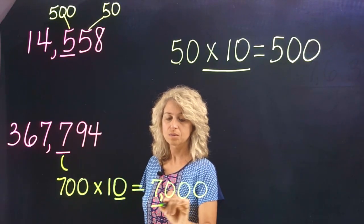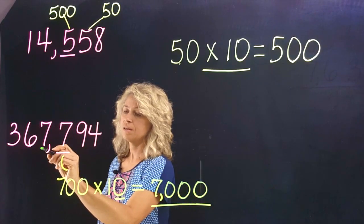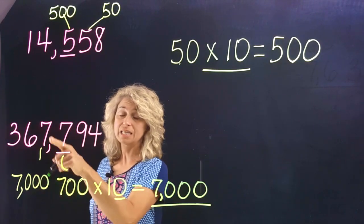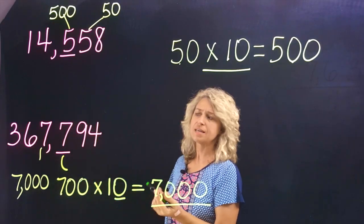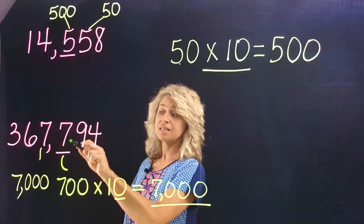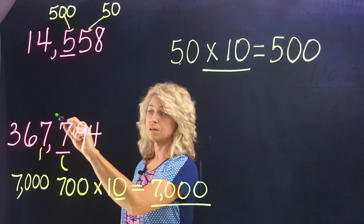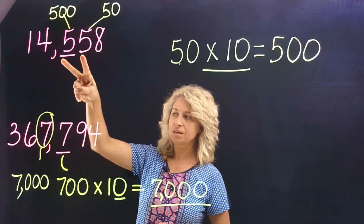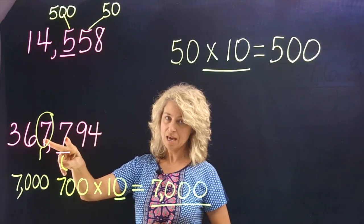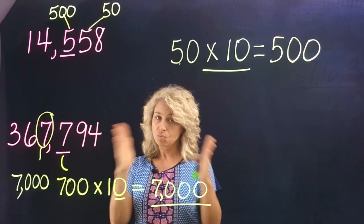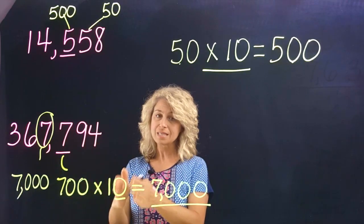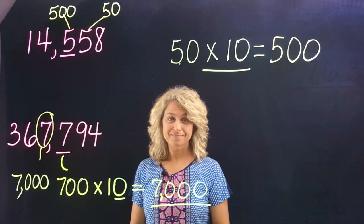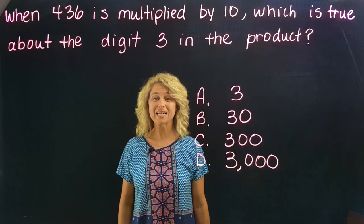Now look at this seven — the value of this seven just so happens to be seven thousand because it is in the thousands place. So if I said can you circle the digit that is ten times the seven in the hundreds place, you would circle this digit right here. Are you noticing something? The fives are the same, the sevens are the same — as long as the digits are the same and right next to each other, the value is ten times the other.